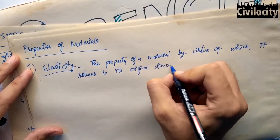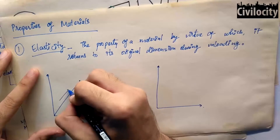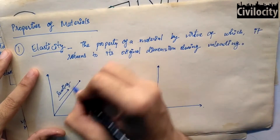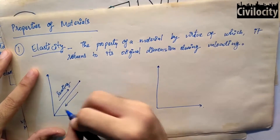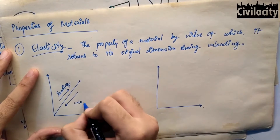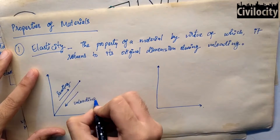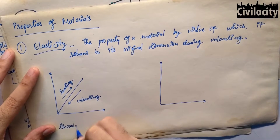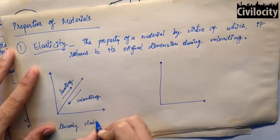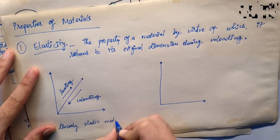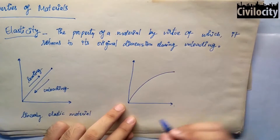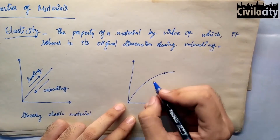If we look at the graph, there are two types. One is a linear graph — during loading, the material follows a linear curve, as we have seen in mild steel specimens. If it follows the same path back to the origin on unloading, then our material is an elastic material.